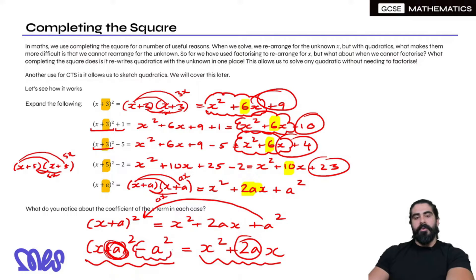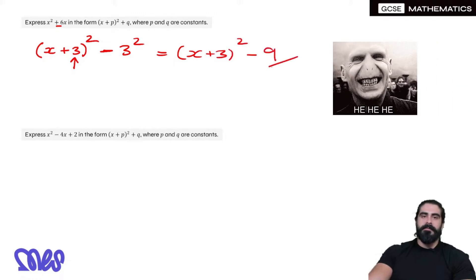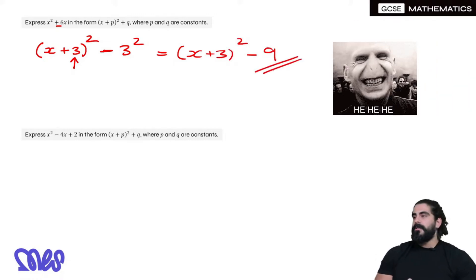Then we always have to subtract that number squared. So once we've introduced this, we always subtract this number squared. So we subtract 3 squared. And that's it. That's in completed square form, we just need to simplify. So that would be (x + 3)² - 9. And that's your answer.